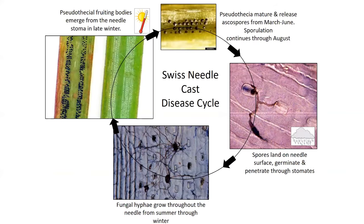Here's a slide of the disease cycle of Swiss needle cast, which begins in the spring when spores are released from fruiting bodies on infected needles. The spores are dispersed by wind and rain to newly emerging foliage. If there's adequate moisture and suitable temperatures, the spores germinate and hyphae explore the leaf surface and enter the newly infected needles through the stomates. The fungus then grows throughout the summer within the needle, and later forms fruiting bodies that plug the stomates. Over the winter, the fungus matures and releases spores the following spring.